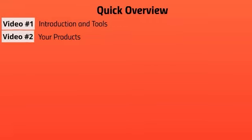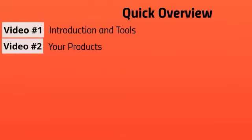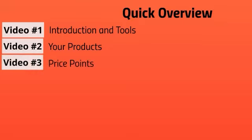Video number two we're going to talk about your products. You really need to have an idea of what you're selling before you set up your digital membership site. A lot of people buy the membership script and want to set it up right away without really knowing what the plan is. Depending on what your product is and what your price point is — covered in video number three — those items will pretty much show you what you need to do. If you don't know these items and you try to set up your membership script, everything will seem complex.